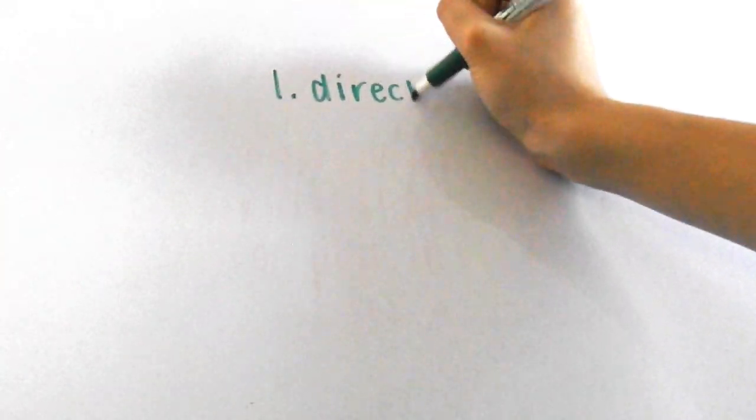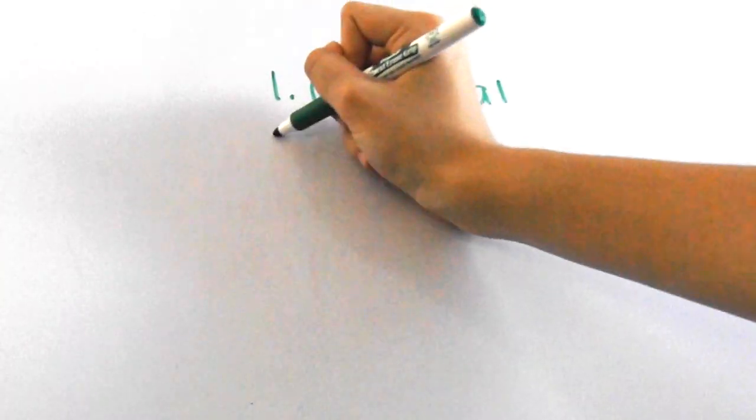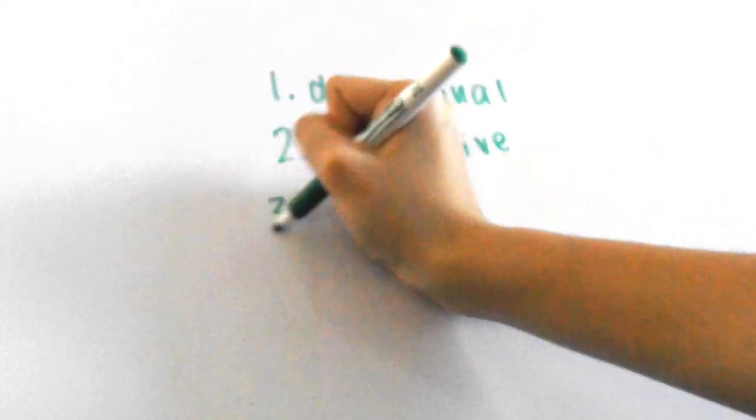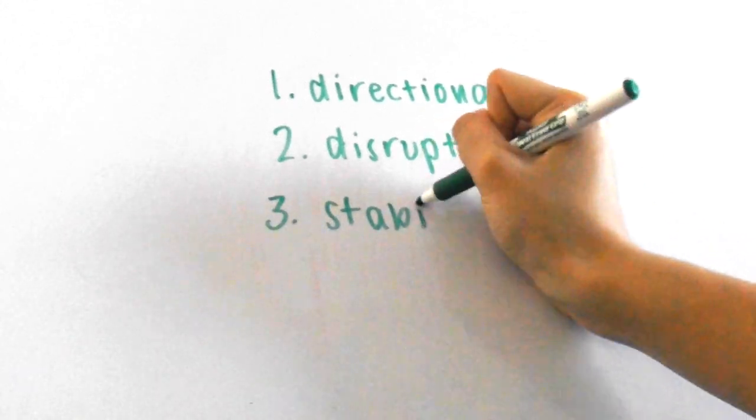Time for my favorite part of this whole video, the types of natural selection. You're going to love this too since it's so easy to understand. There are three types of natural selection: directional, disruptive, and stabilizing.